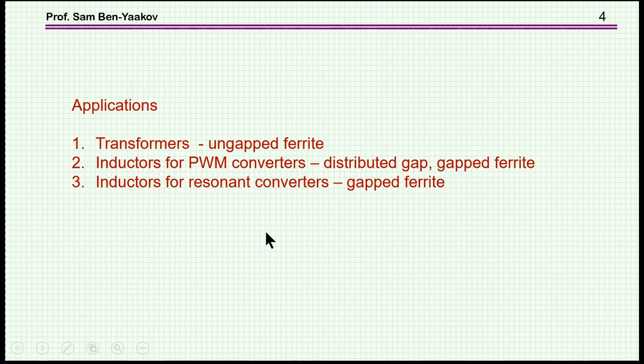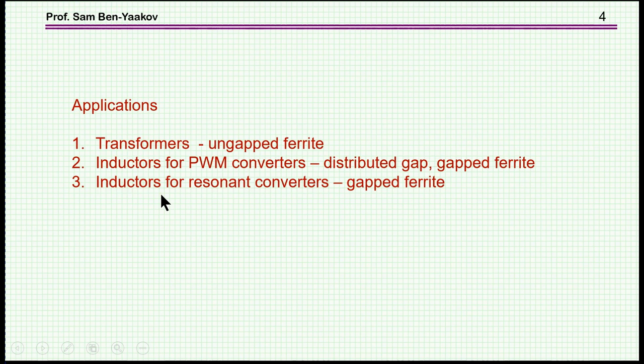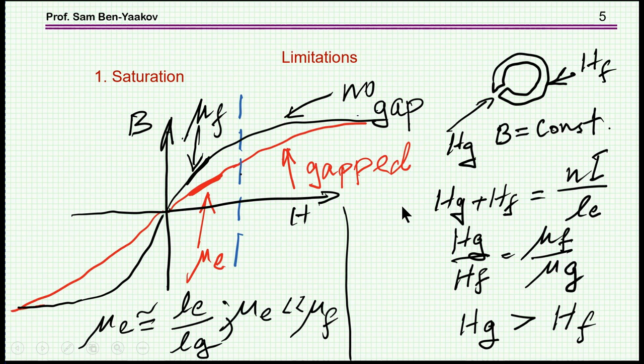What are the applications of toroids in power electronics? For transformers, this will primarily be the un-gapped ferrite. For inductors in PWM converters, we need to store energy in the inductor, so we need either a distributed gap toroid or a gapped ferrite. For inductors in resonant converters, if you use a toroid, a gapped ferrite is the best choice. Using a distributed gap usually results in much higher losses, which we will discuss later.